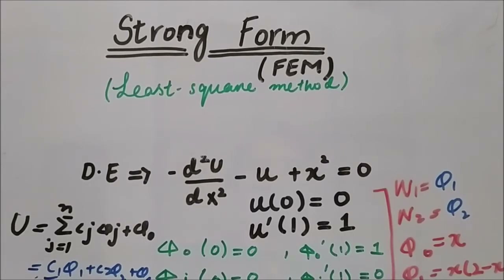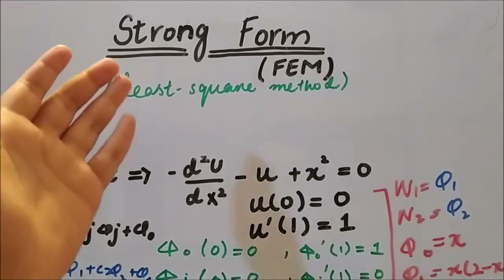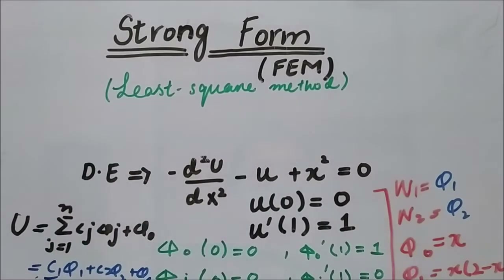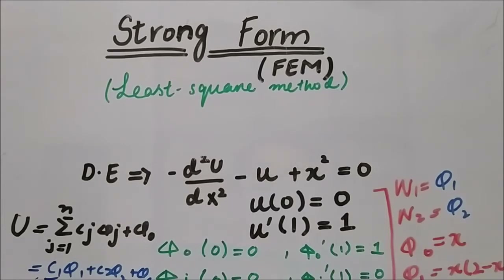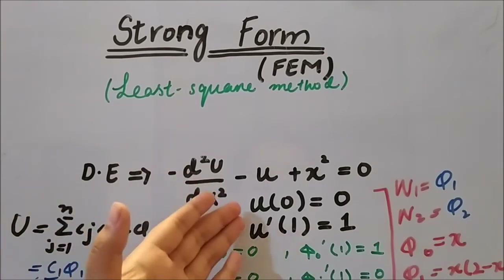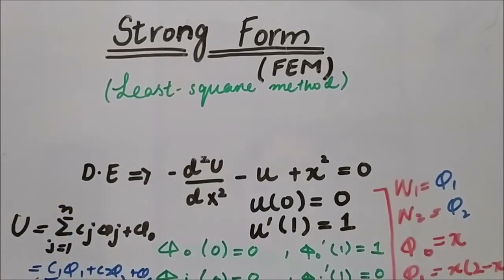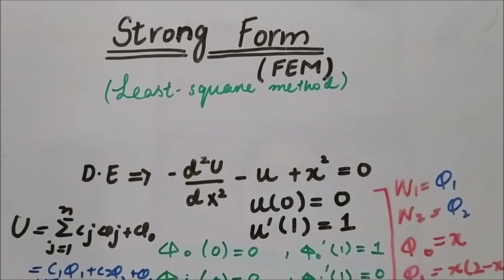Hello everyone, this is from eAcademy. This video is about the third method of the strong form — the Least Square Method — one of the methods used in the weighted residual method. So far we have seen two methods: the first one was Petrov-Galerkin and the second one was Galerkin. We have also solved an example related to both the Petrov-Galerkin and Galerkin methods.